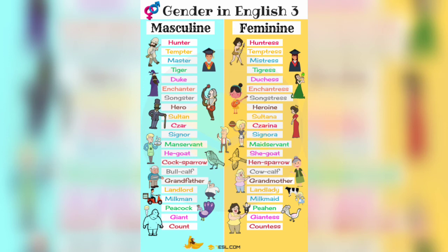More examples: hunter — huntress (one who hunts), tempter — temptress, master — mistress, duke — duchess, enchanter — enchantress (one who praises God in the temple), songster — songstress, hero — heroine, sultan — sultana, czar — czarina, señor — señora, manservant — maidservant, he-goat — she-goat.